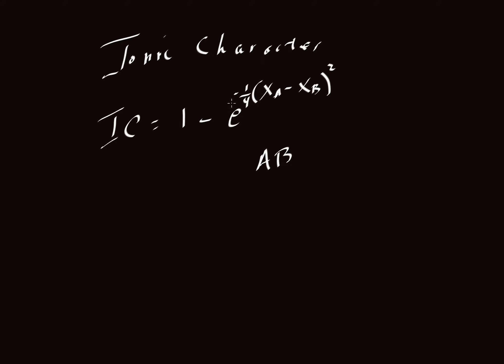And these two fellows here, x_a and x_b, are the electronegativities of elements a and b that are being bonded to one another. We take the difference of their electronegativities, square it, and multiply by minus one-fourth. That's all raised - e is raised to that power. Subtract one and we have ionic character.